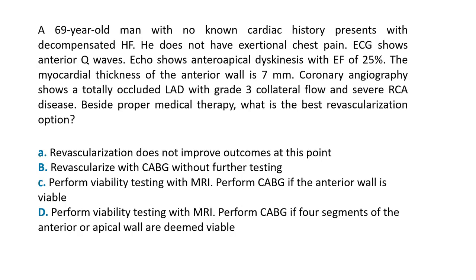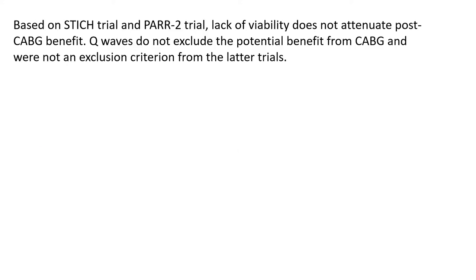A 69-year-old man with no known cardiac history presents with decompensated heart failure, no exertional chest pain, EKG showing anterior Q waves, echo showing antero-apical dyskinesis with EF of 25 percent, and coronary angiography showing a totally occluded LAD and severe RCA disease. Beside medical therapy, the best revascularization option is B — revascularize with CABG without further testing. Option D, offering more specificity around anterior wall viability, is not the right answer here.